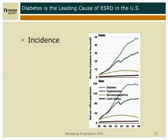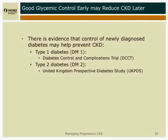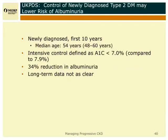Diabetes is the leading cause of kidney disease in the United States. The natural history, as I outlined earlier, shows damage beginning early, well before it becomes clinically apparent. What we know is that glycemic control — tight glycemic control — makes a difference early, probably before the development of kidney disease, and that's been validated. The control of even newly diagnosed type 2 diabetes may lower the risk of albuminuria.